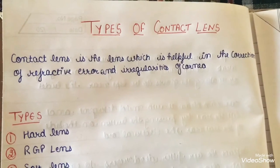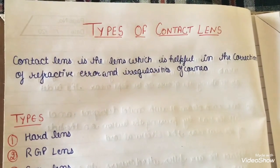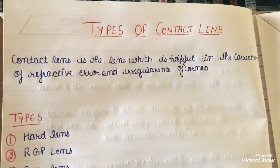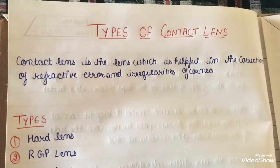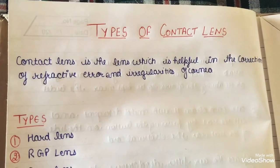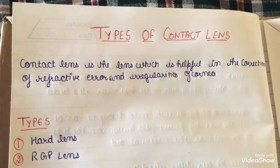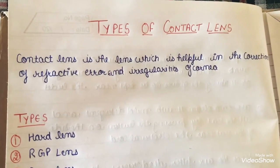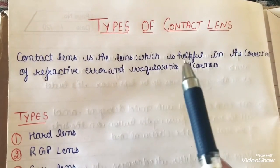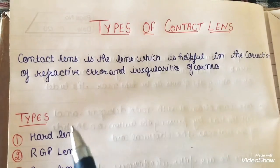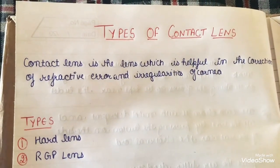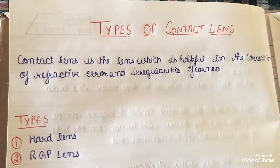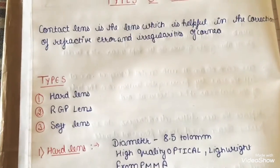Before knowing the basic types, I am not talking about brands or companies, but basically the types based on thickness or softness — the categories in which contact lenses are divided. A contact lens is a lens helpful in the correction of refractive error and irregular cornea. Basically, there are three types of lenses.